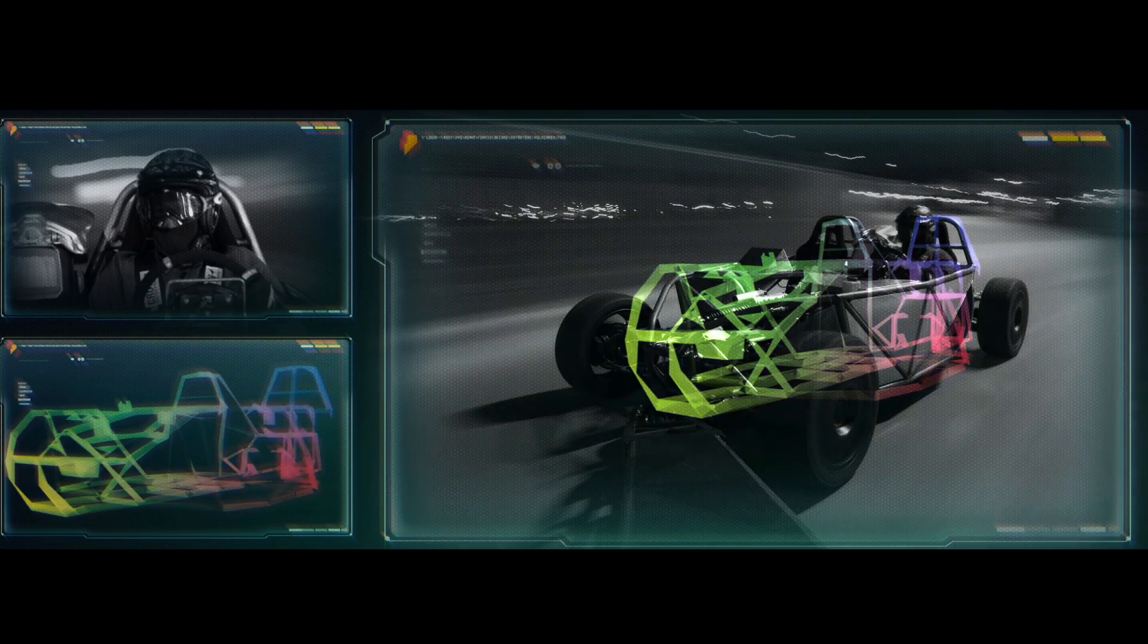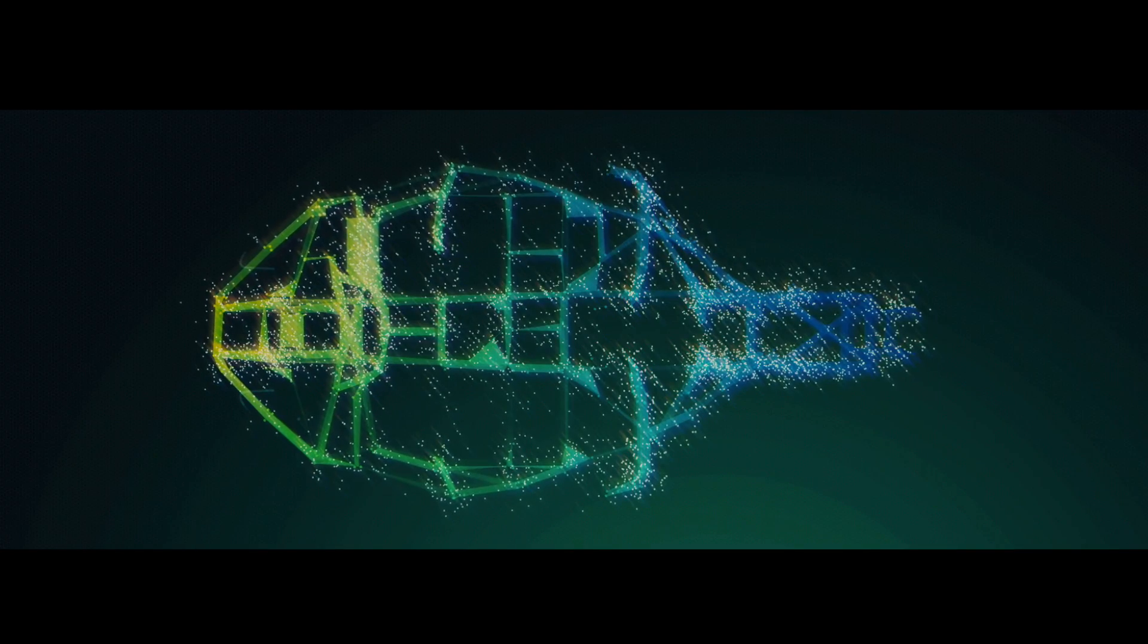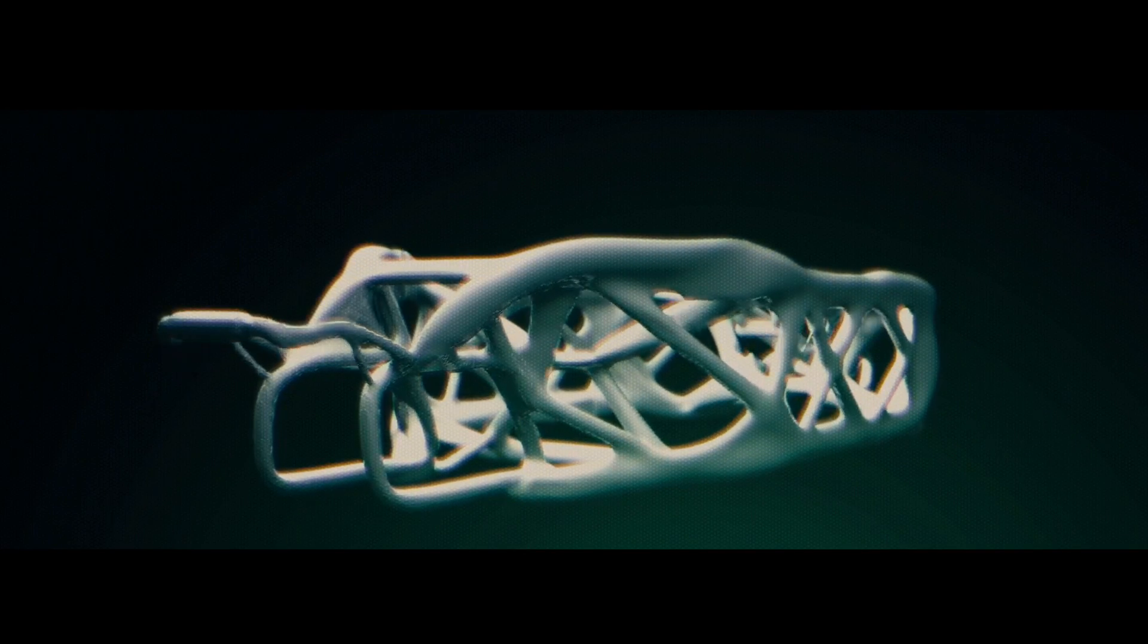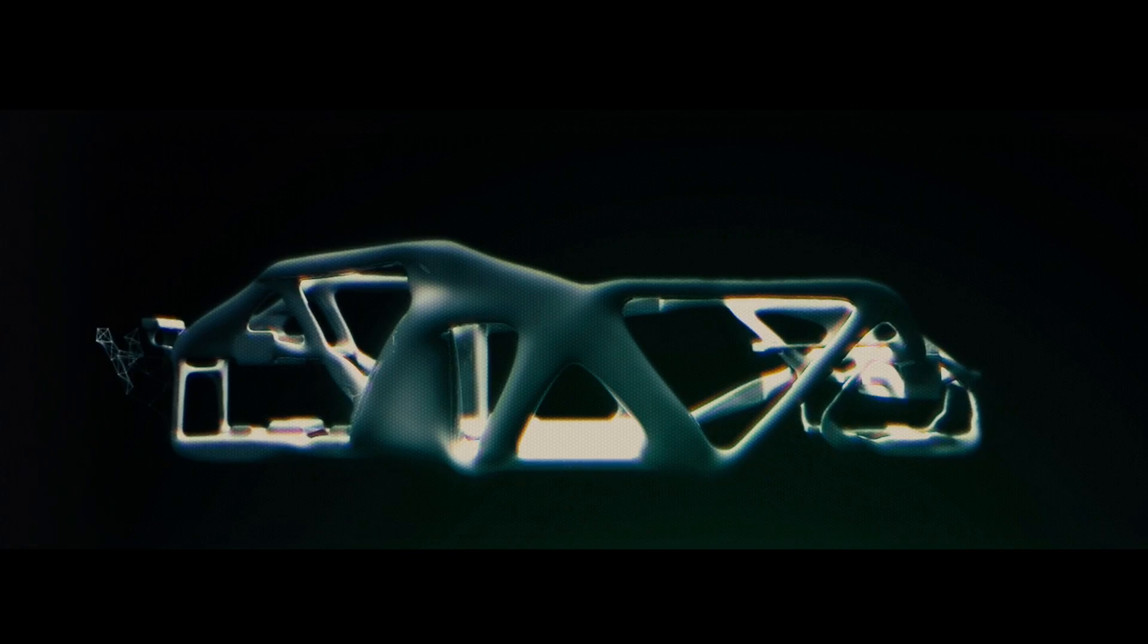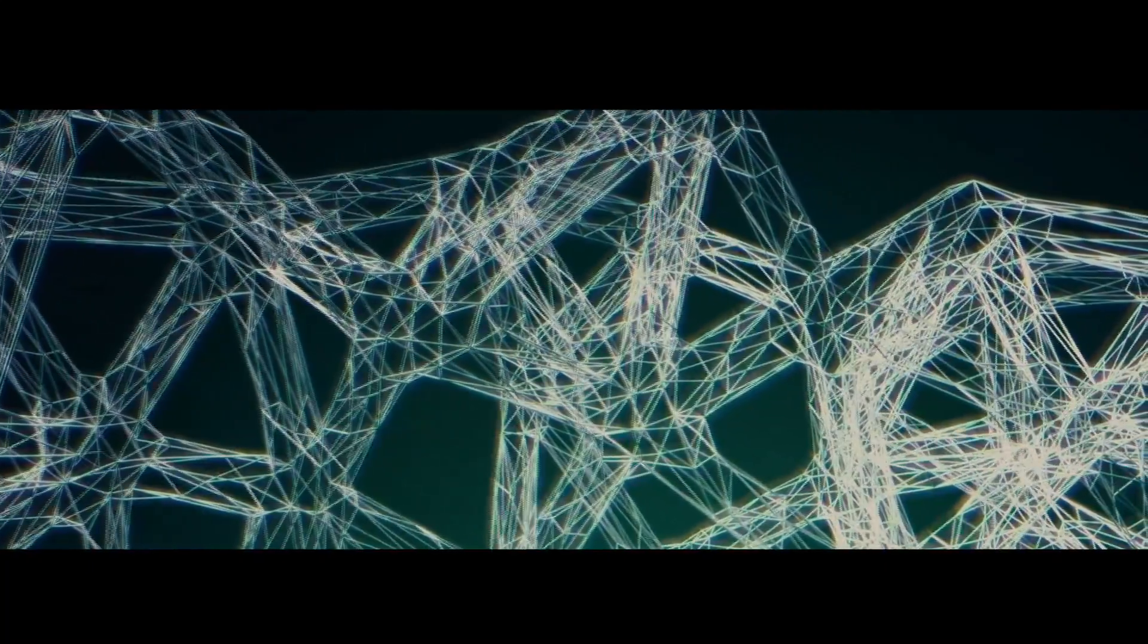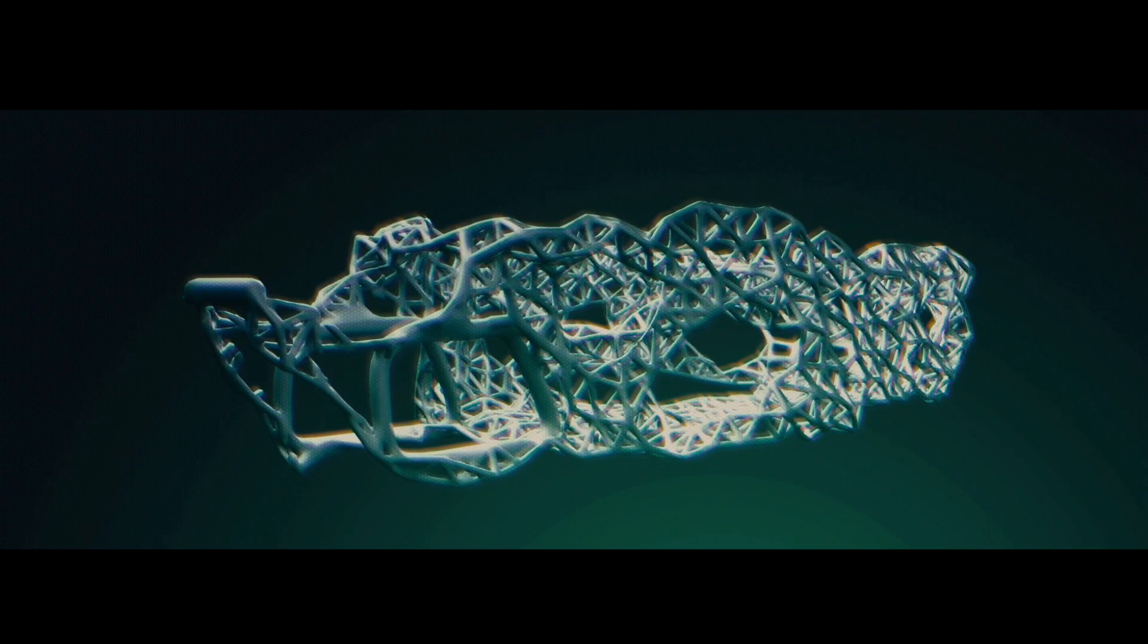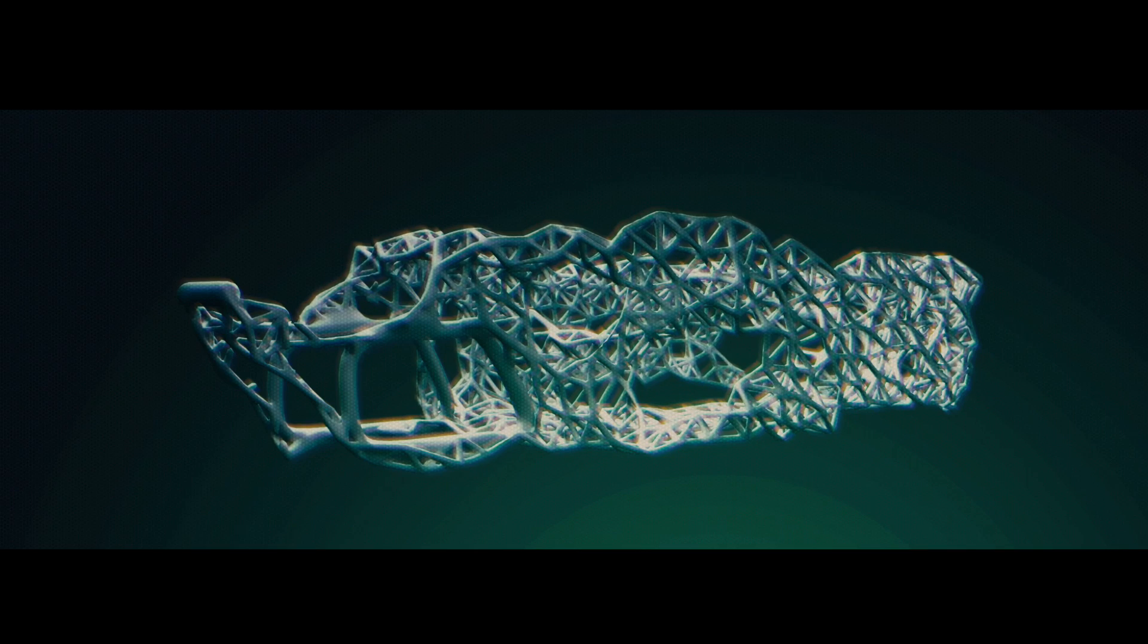The last example I want to give you is an example we call the hack rod. This is a car chassis, a hot rod chassis that we made. What we did was we took an existing chassis and we sensed it. So we put 60 sensors on it. We took the loads as we were driving it. We brought that back to the office. We fed it into our generative design tool. And then that tool returned multiple solutions, three of which we liked. We liked one in titanium, but we didn't have a titanium printer the size of a chassis. Another one we liked was aluminum.